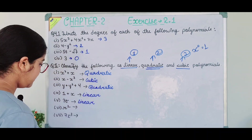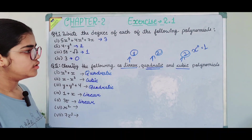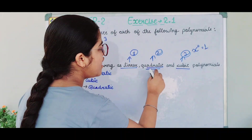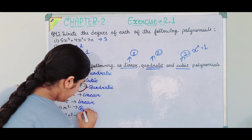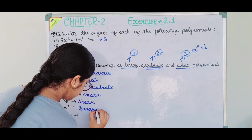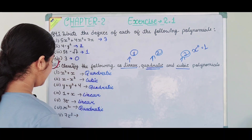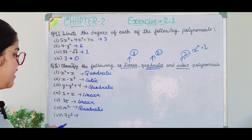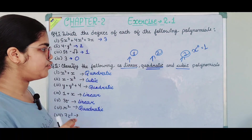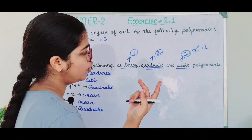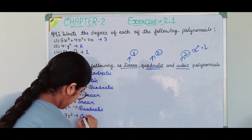The sixth part is r². The power of r is 2, so the degree is 2 — this is a quadratic polynomial. The last part is 7x³. The power is 3 — so the degree is 3. This is a cubic polynomial.